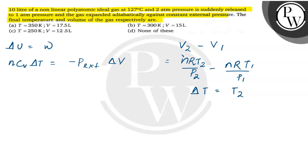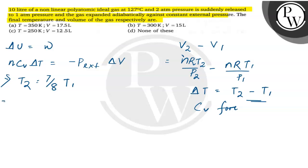ΔT will be equal to T2 minus T1, and Cv for a non-linear polyatomic ideal gas is 3R. Solving, we get T2 is equal to 7/8 of T1. Since T1 is 127 degree Celsius, that is 400 Kelvin, we get T2 equal to 350 Kelvin.